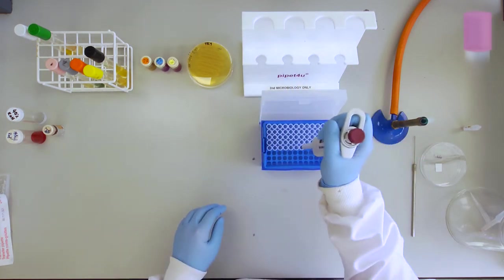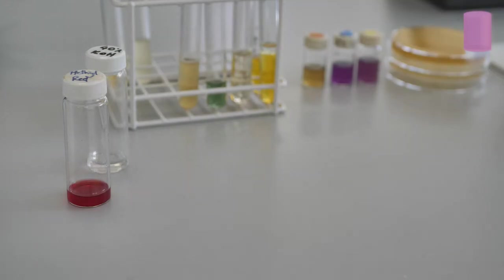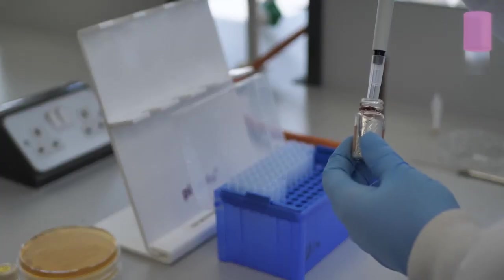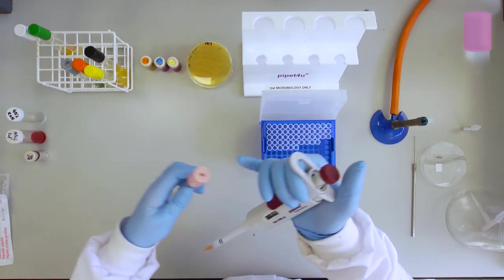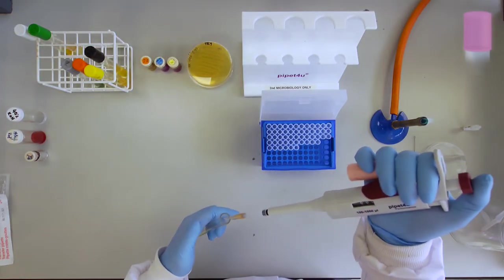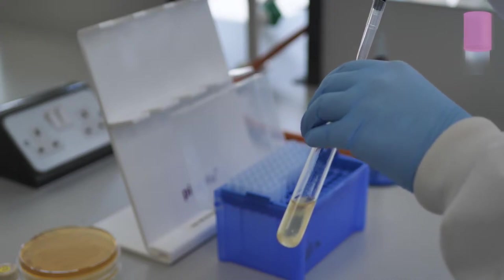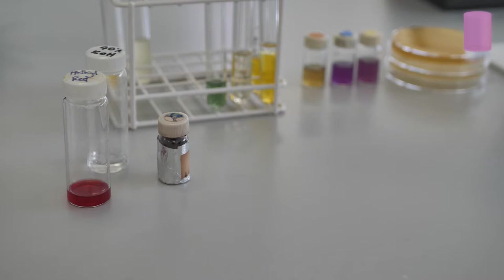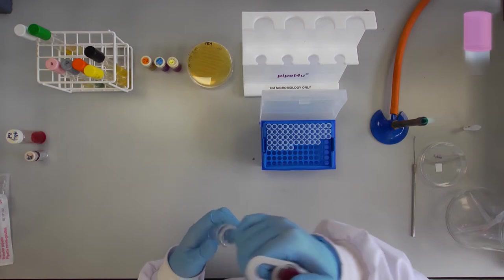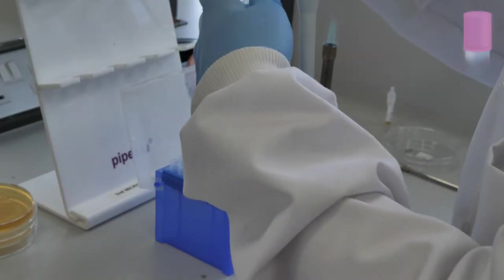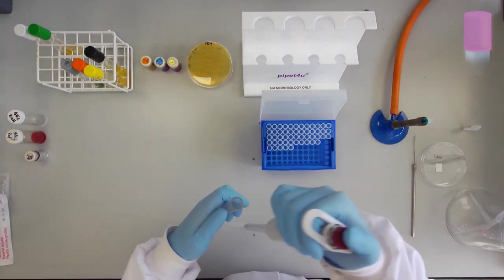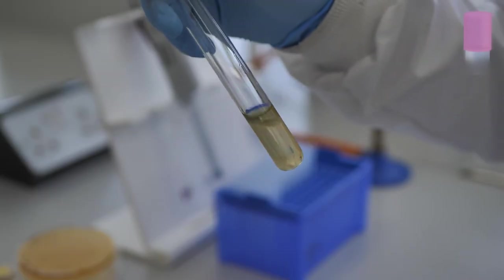For the Voges-Proskauer test add 600 microlitres of 5% alpha-naphthol solution to the test tube using a sterile tip. Using a new tip add 200 microlitres of 40% KOH to the same test tube. Shake and slope the tube.